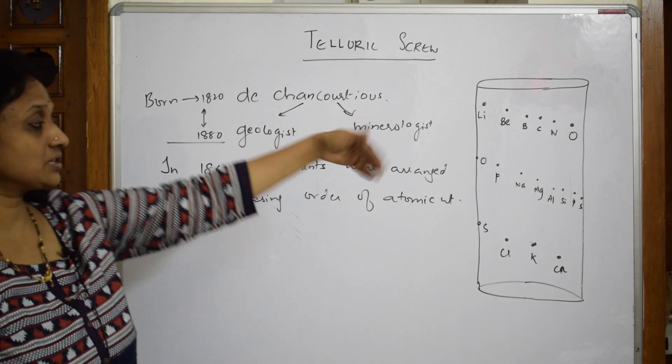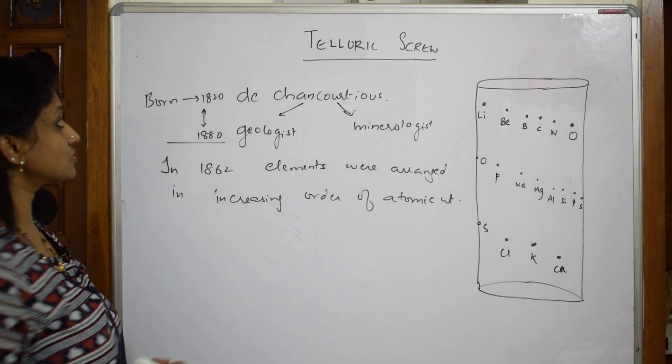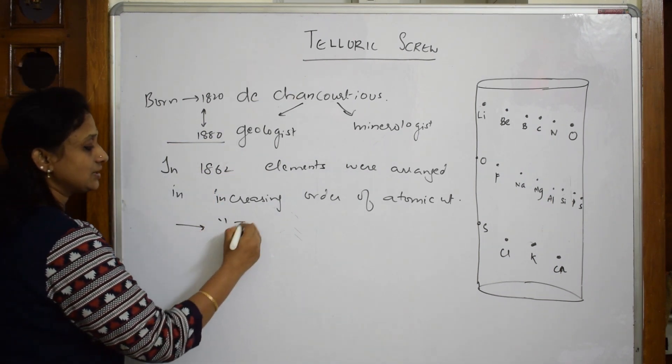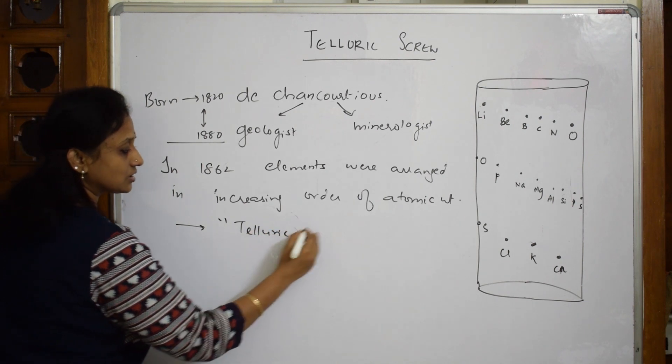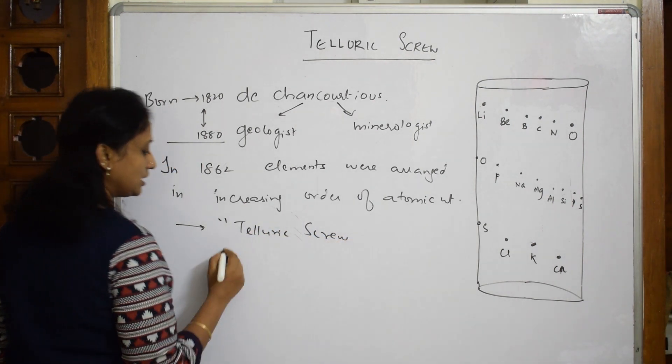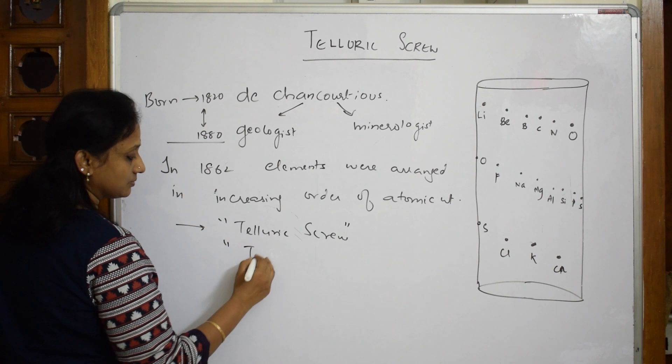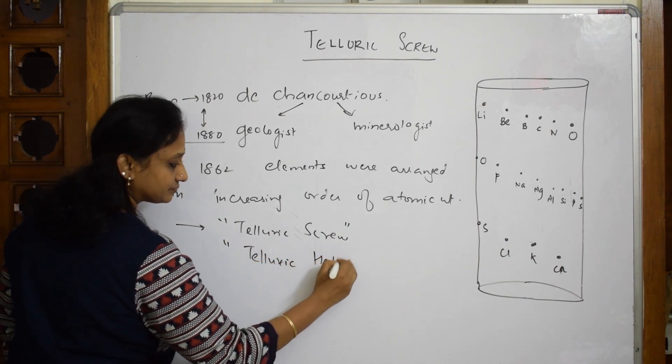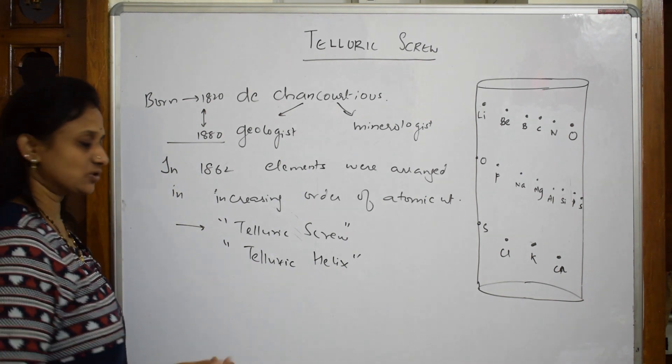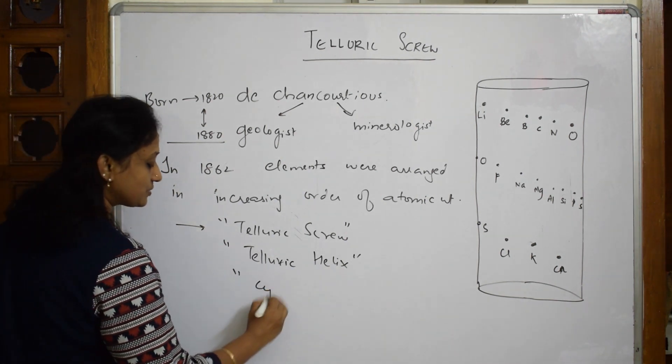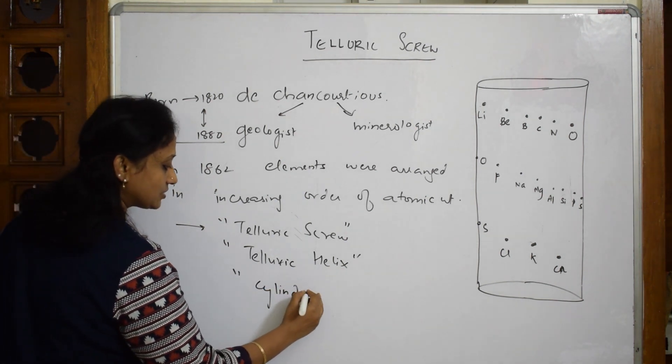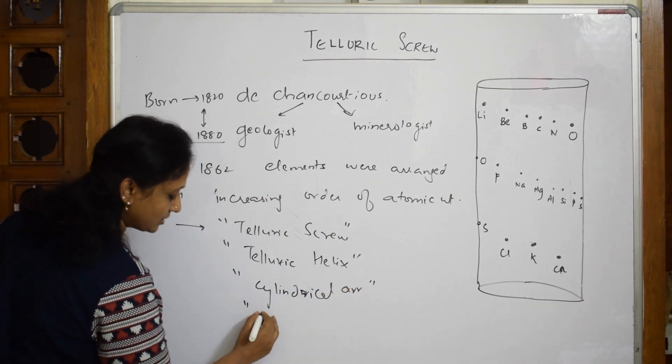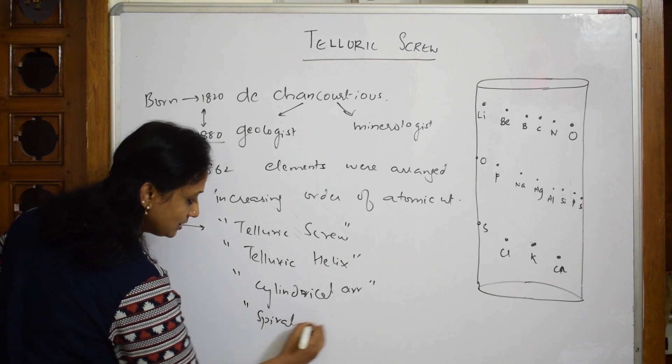What did he arrange? He has arranged them in the form of a cylinder. This is also called as telluric screw or telluric helix. We also call it as cylindrical arrangement or spiral arrangement.